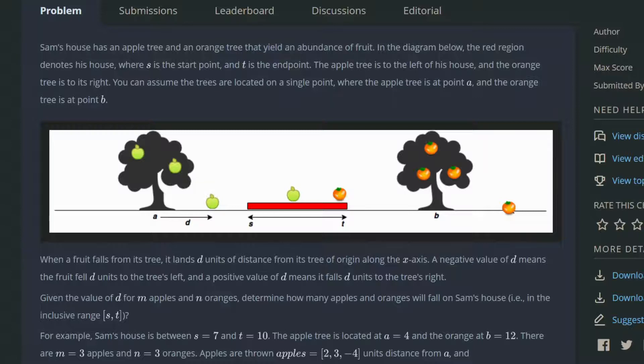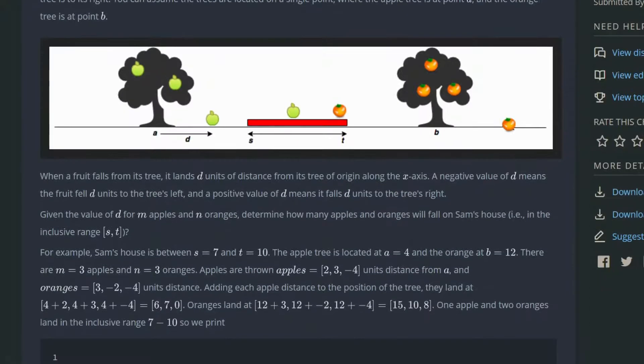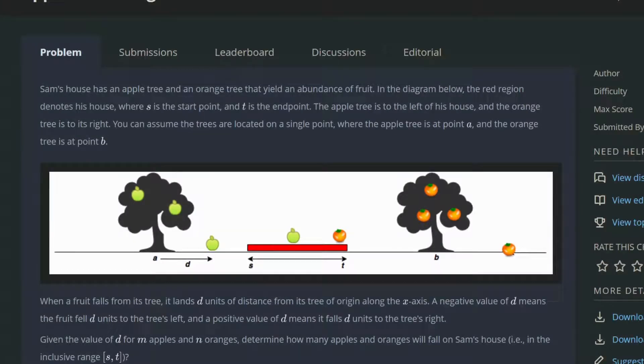If an orange drops minus 4, it will move to the left from point B minus 4, and the same thing for the apple tree. If they give you 5 for the apple that drops, it will move 5 points to the right. Minus 5 will move 5 points to the left.